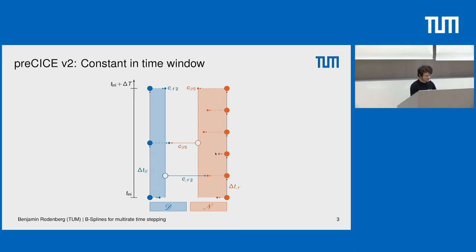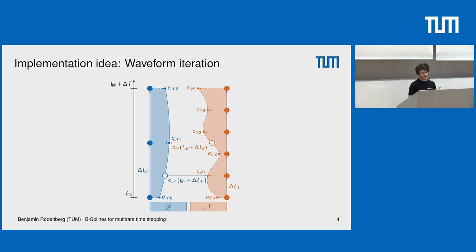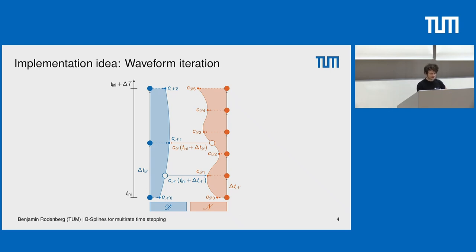Over the last years we therefore studied an approach called waveform iteration. The idea is that instead of always exchanging just one constant value at the end of the window, you exchange functions. We construct B-splines from the data obtained in between, which is nice and smooth and gives more detail. Our hope is that this also helps with respect to numerics. On the next slides I'll show results from past years evaluating this approach, and then show more details on the current state of implementation.